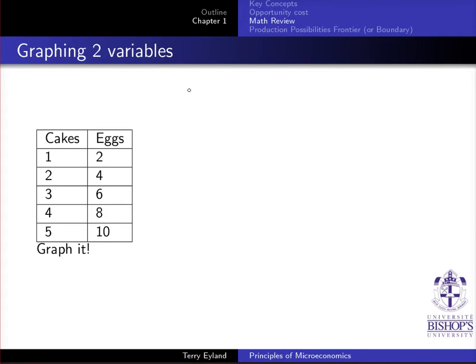When I give you two variables and ask you to graph them, I get different responses from students. Some people will decide to put cakes on the vertical axis because the amount of cakes depends on the amount of eggs — making cakes the dependent variable — and put eggs on the horizontal axis. That's one way to graph it based on prior knowledge.